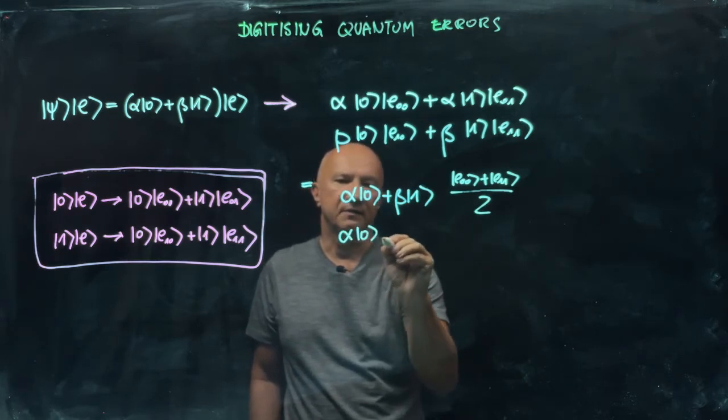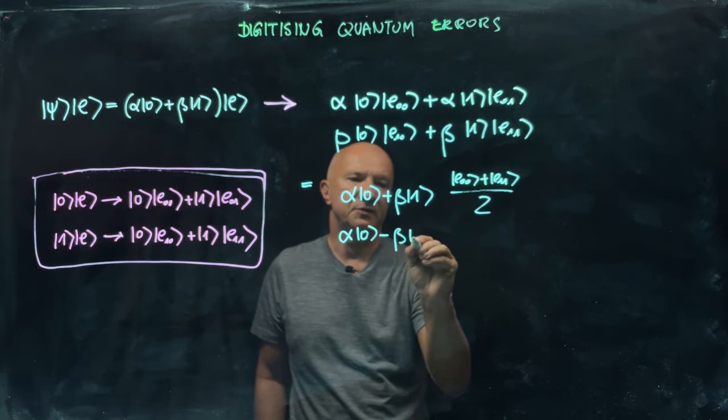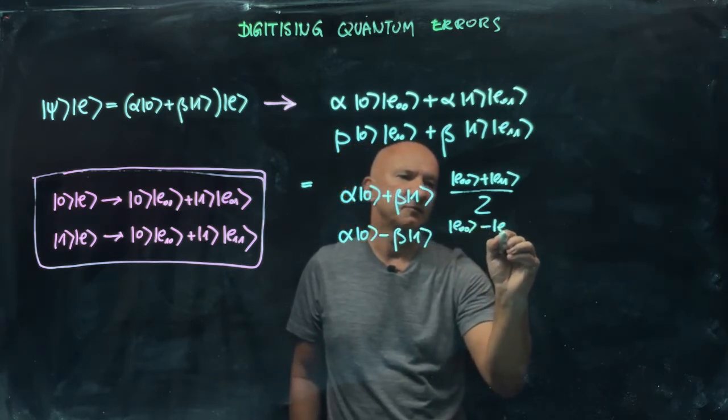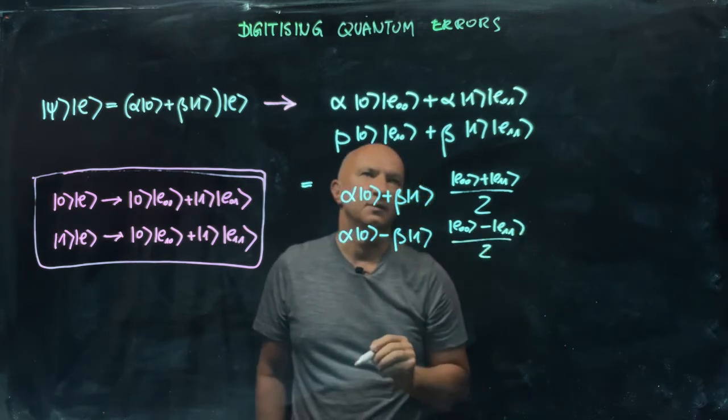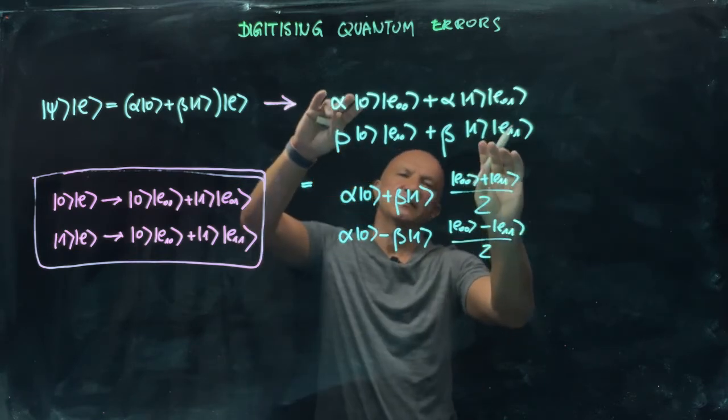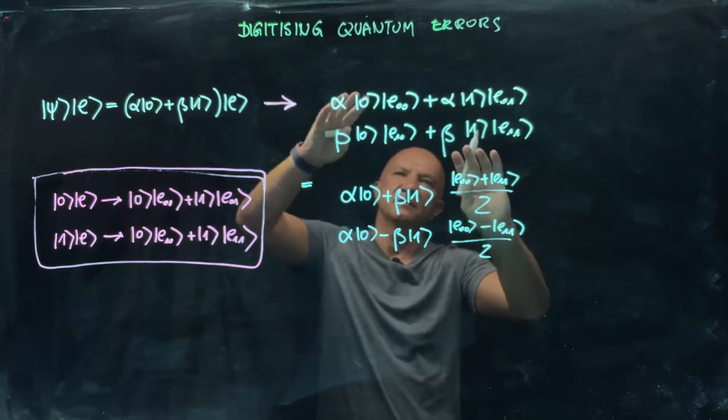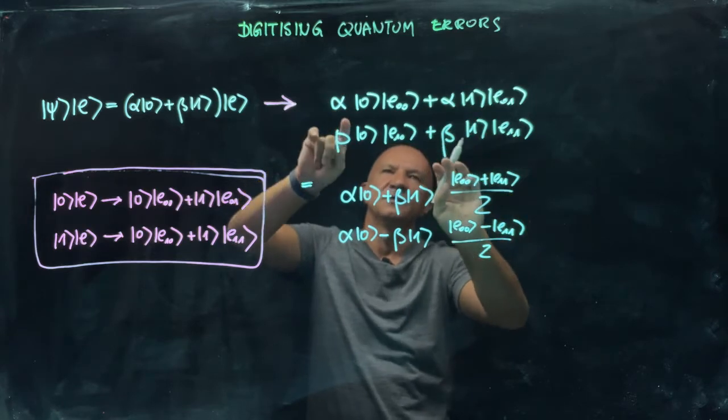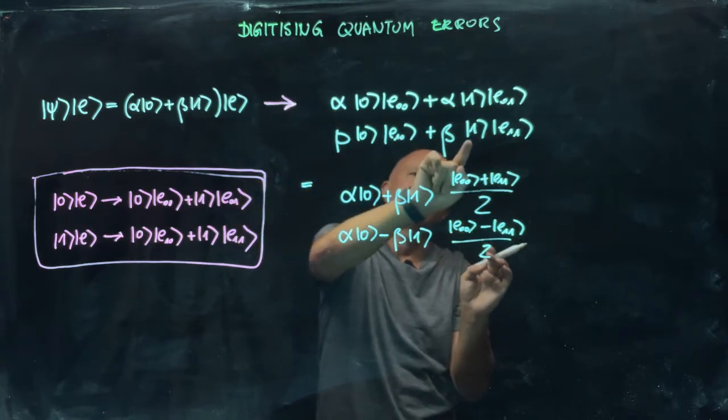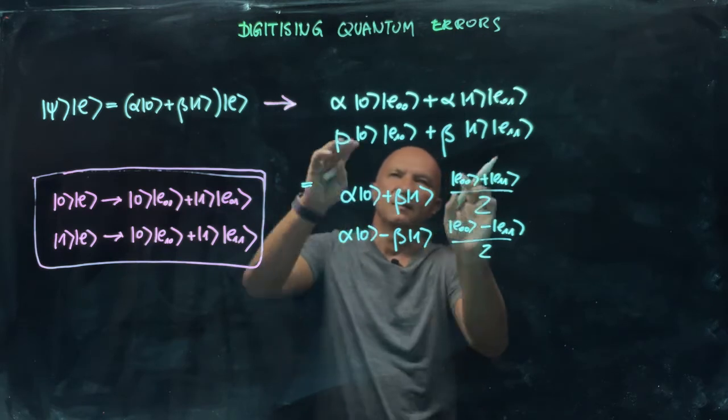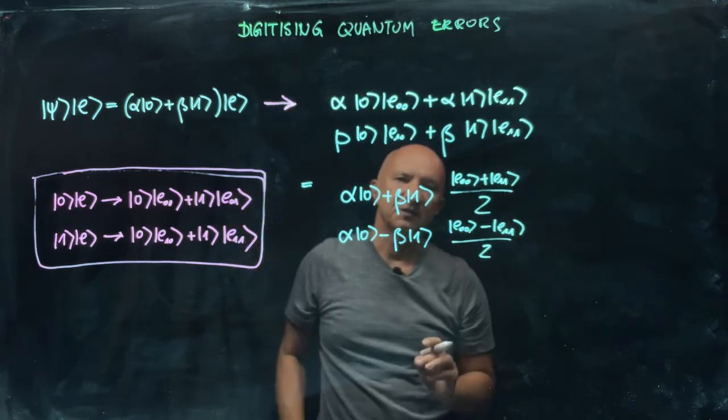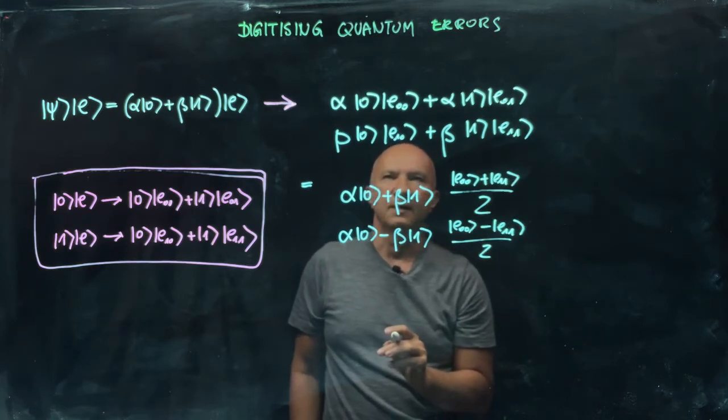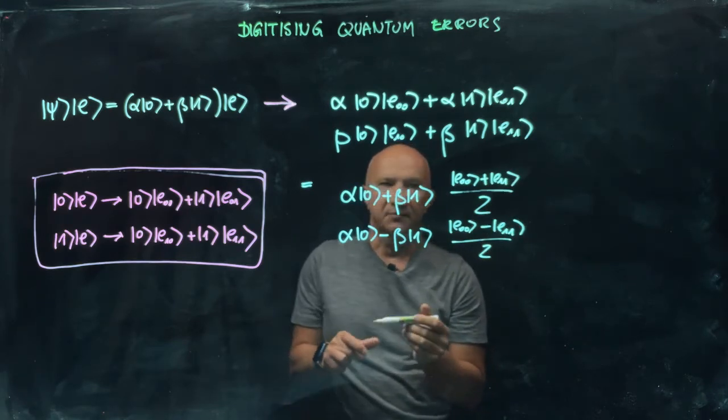And I'll have (alpha|0⟩ - beta|1⟩)(|E0⟩ - |E1⟩)/2. You can see I've just rearranged things, taking care of those two terms: alpha|0⟩|E0⟩ and beta|1⟩|E1⟩. The sum of the two can be written in a slightly more complicated way, but this will be useful for our subsequent interpretation.